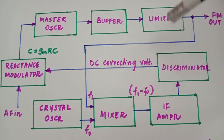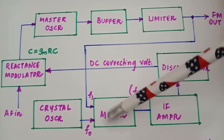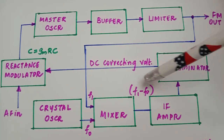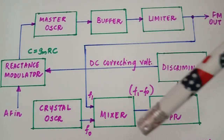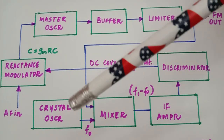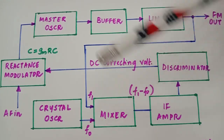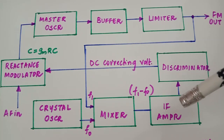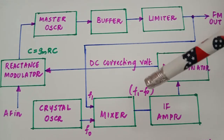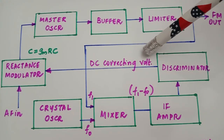F1 is a fraction of the output taken from the master oscillator, and F0 is the output of the crystal oscillator. The difference frequency F1 minus F0 is about 1/20th of the master oscillator frequency. What we want is for the oscillator to work at the same frequency as the crystal oscillator. This difference frequency is used to detect any frequency drift in the master oscillator output, and it is amplified by an IF amplifier tuned to this difference frequency.